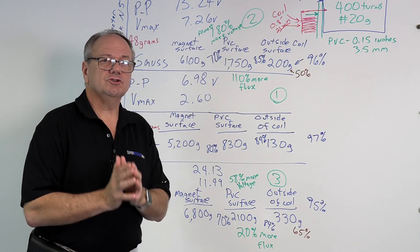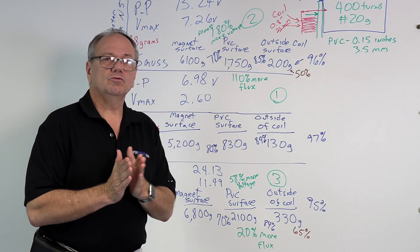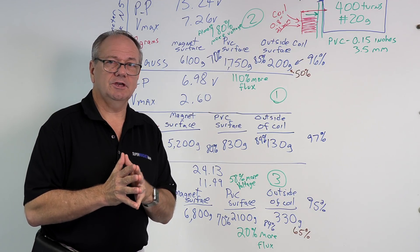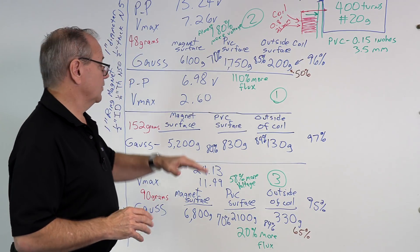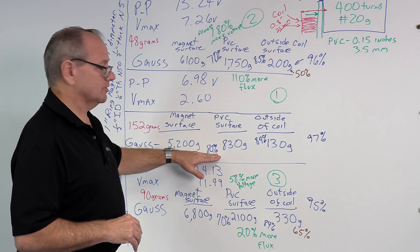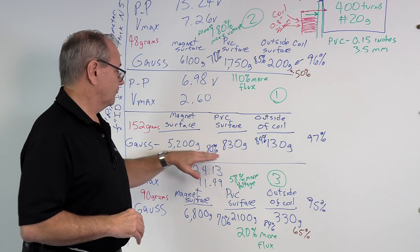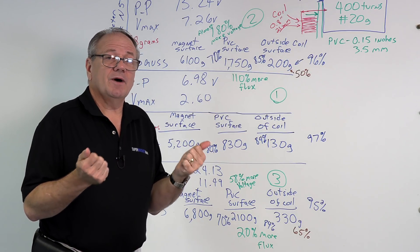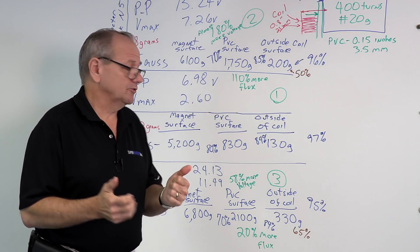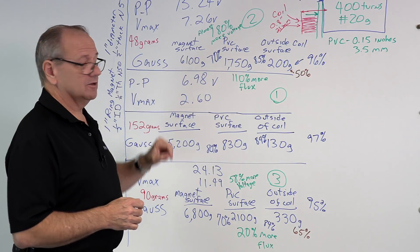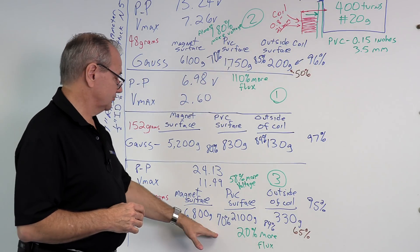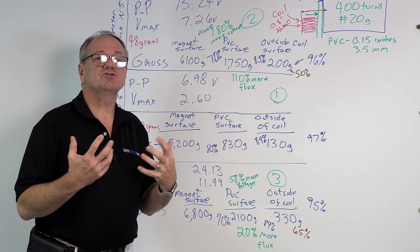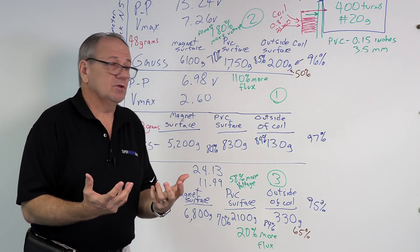When you're looking at using magnetism, you want to use the magnetism as close to the surface of the magnet as you can. Notice that we have lost 80% of our flux on the ring magnet just going through the PVC pipe. We lost 80% of the possible energy we had available to us. We lost 70% on the one by a half, and we lost 70% on the one by one.